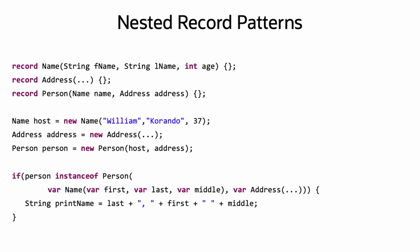Record patterns can be nested, like in this example of deconstructing Person and then deconstructing Name. Happy coding!